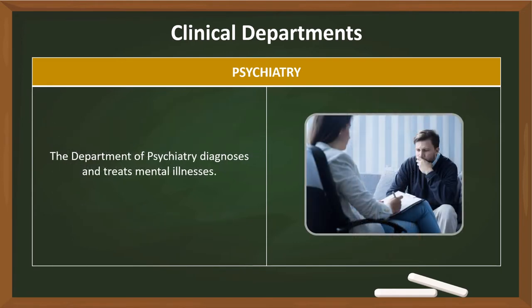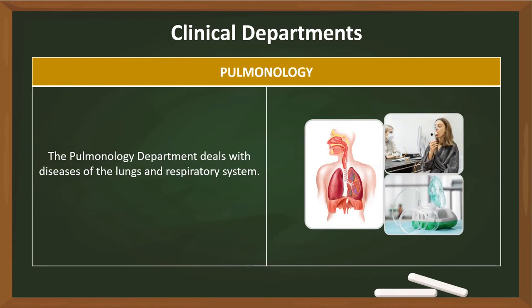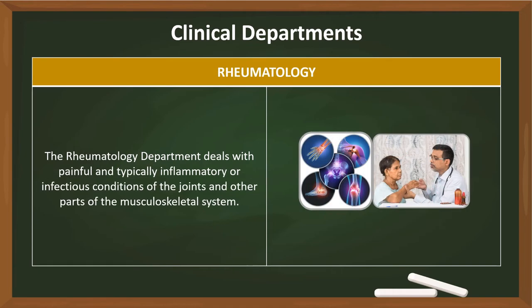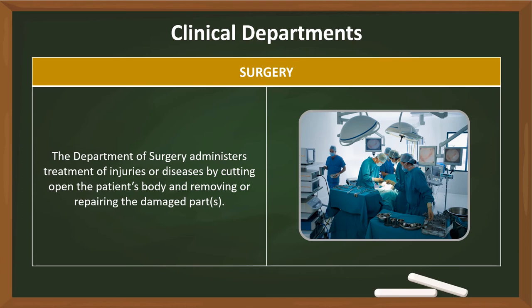The department of psychiatry diagnoses and treats mental illnesses. The pulmonology department deals with diseases of the lungs and respiratory system. The rheumatology department deals with painful and typically inflammatory or infectious conditions of the joints and other parts of the musculoskeletal system.